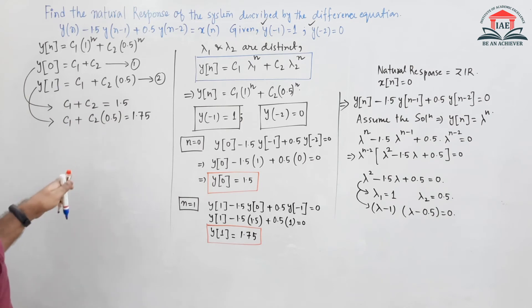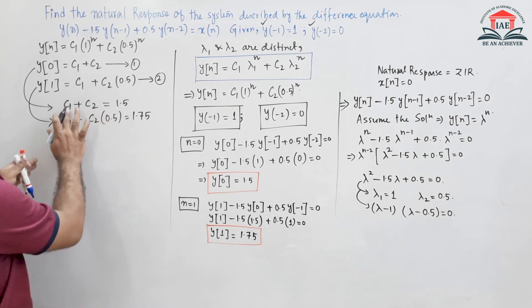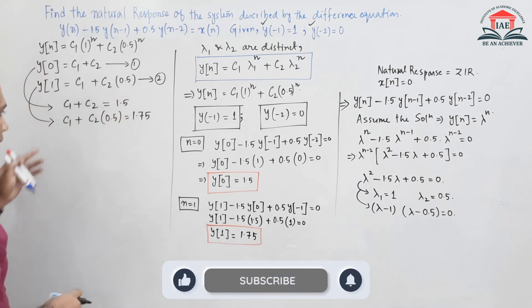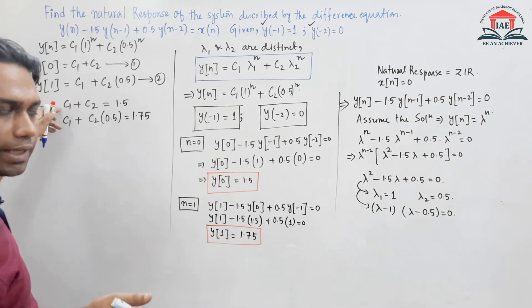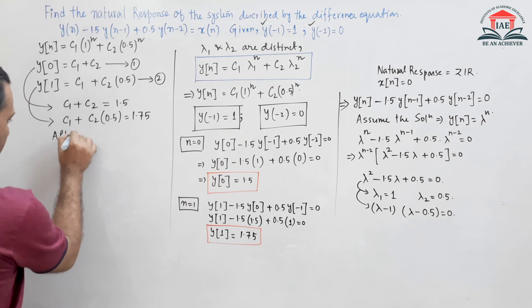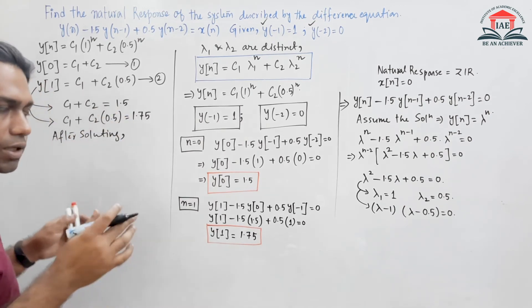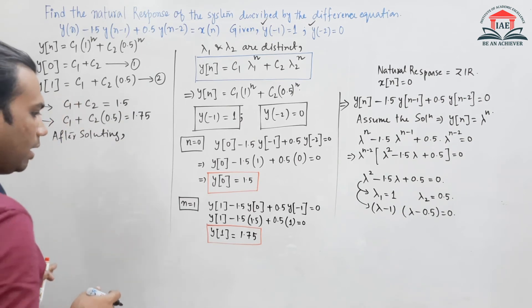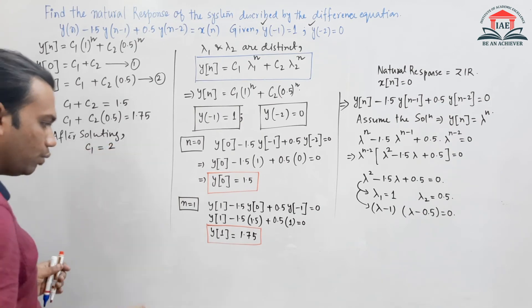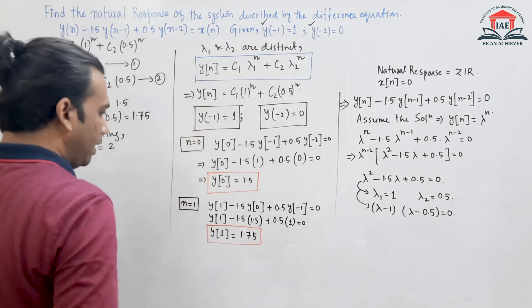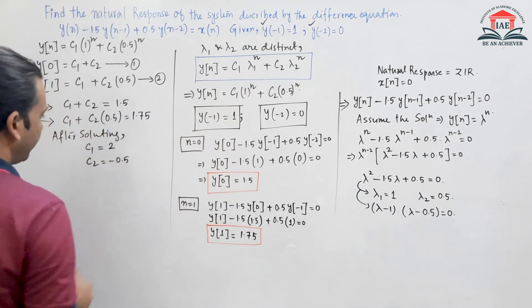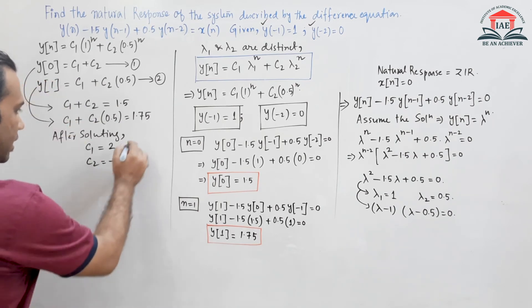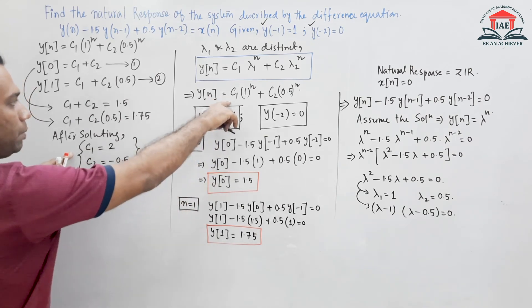We now have two equations and two unknowns c1 and c2. Solving these two equations using substitution or any method, we get c1 = 2 and c2 = -0.5.